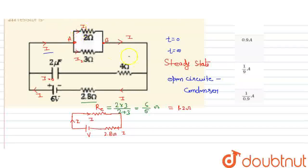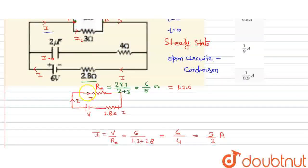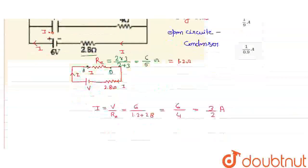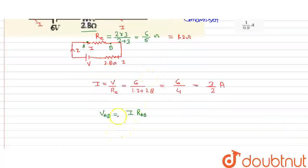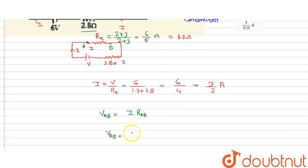To find I1, we need the potential between points A and B. Point A and point B. The potential between A and B equals the current I flowing times the resistance between A and B. The resistance between A and B is 1.2 or 6 by 5 ohms.